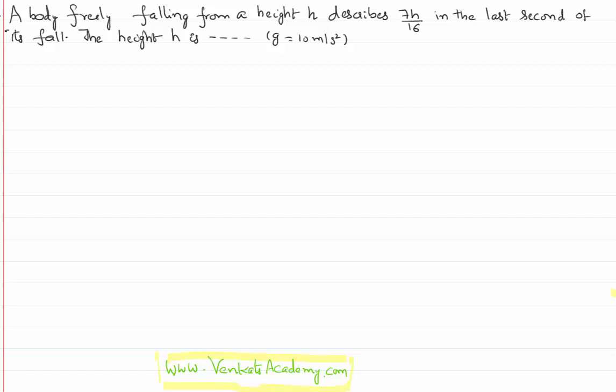Hello everyone, welcome to this video lesson. In this video lesson we are solving a problem in one-dimensional motion. Let us first understand what is given in the problem. The problem is like this: a body is falling freely from a height of H. So it is a freely falling body, that means its initial velocity u = 0.